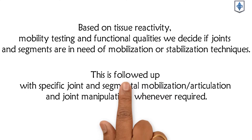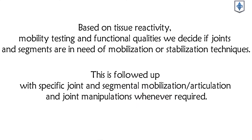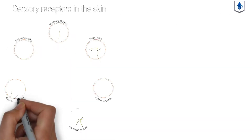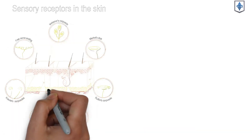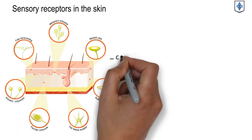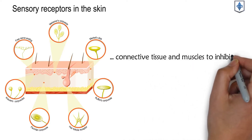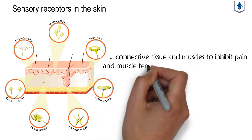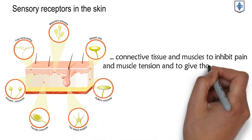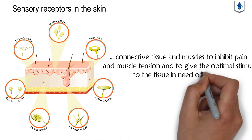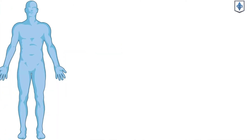This is followed up with specific joint and segmental mobilization or articulation and joint manipulations whenever required. We use the receptors in skin, connective tissue, and muscles to inhibit pain and muscle tension and to give the optimal stimuli to the tissue in need of healing.